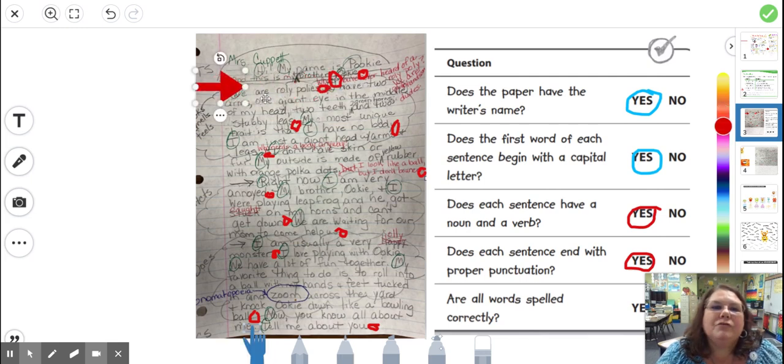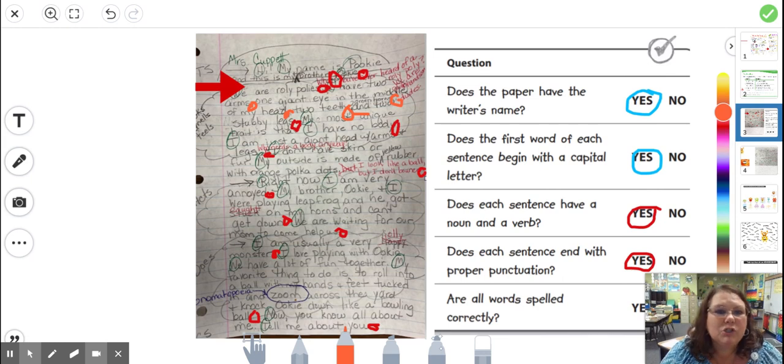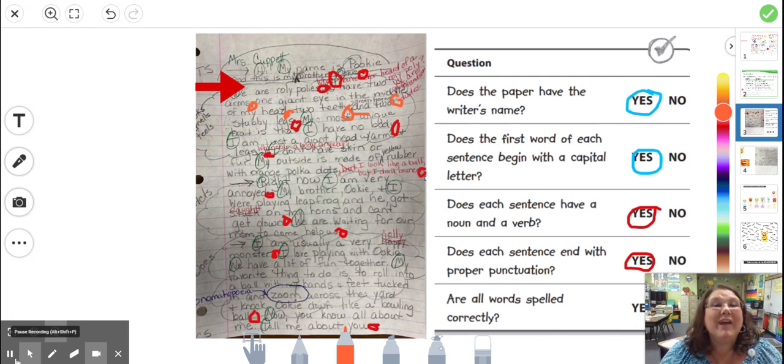So here I say we are roly-polies. I have two arms, comma, so I'm going to circle that, one giant eye in the middle of my head, comma, two teeth, comma, two green horns, comma, and I'm going to underline it, two stubby legs, period. So every time I have a list, I'm going to go make sure that I have commas between my adjectives and the word and in front of the last one. Pause and go check your paper now.